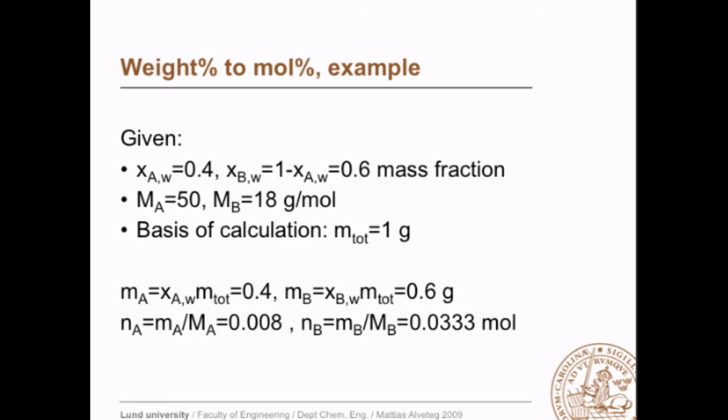And thus we can calculate how many moles we have. The grams divided by the molar mass, so 0.4 divided by 50, that's 0.008, and 0.6 divided by 18, that's 0.0333. And we can calculate the molar fraction as 0.008 divided by 0.008 plus 0.0333 and we get 0.19.